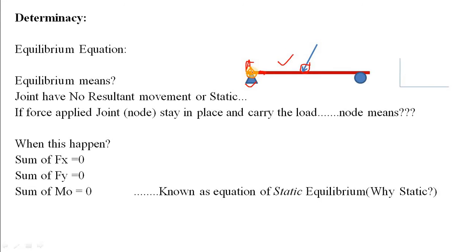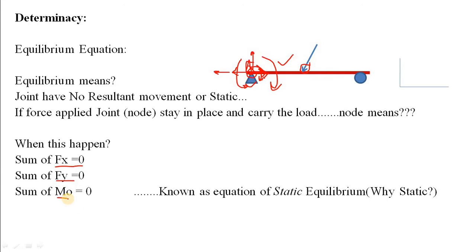To keep the joint static, you must apply an opposite reaction to the direction of any applied force. The summation of forces in the x-direction must equal zero, the summation in the y-direction must equal zero, and the summation of moments must also equal zero. When you satisfy all three conditions, you can say that the joint is in equilibrium.